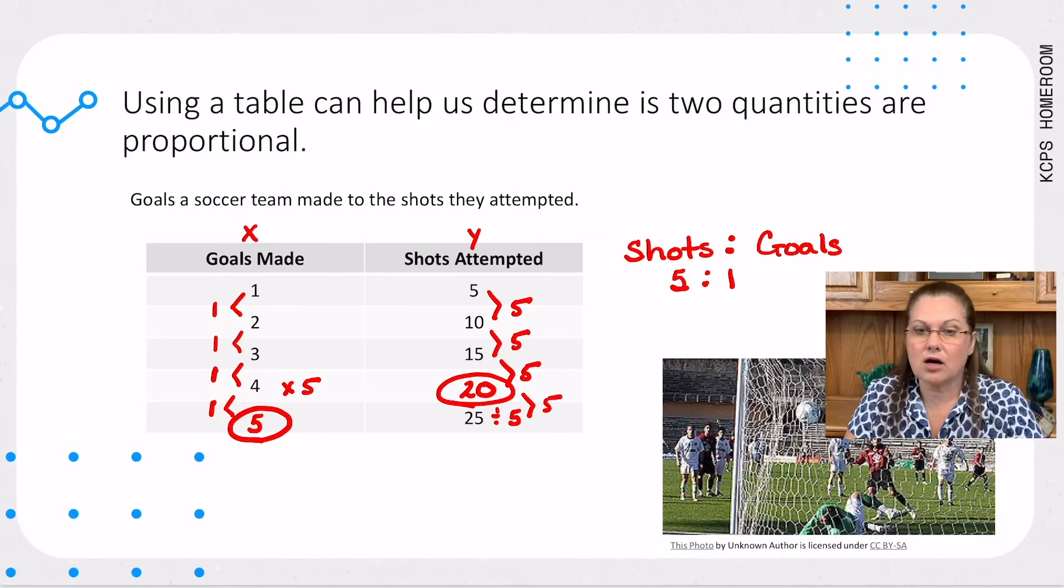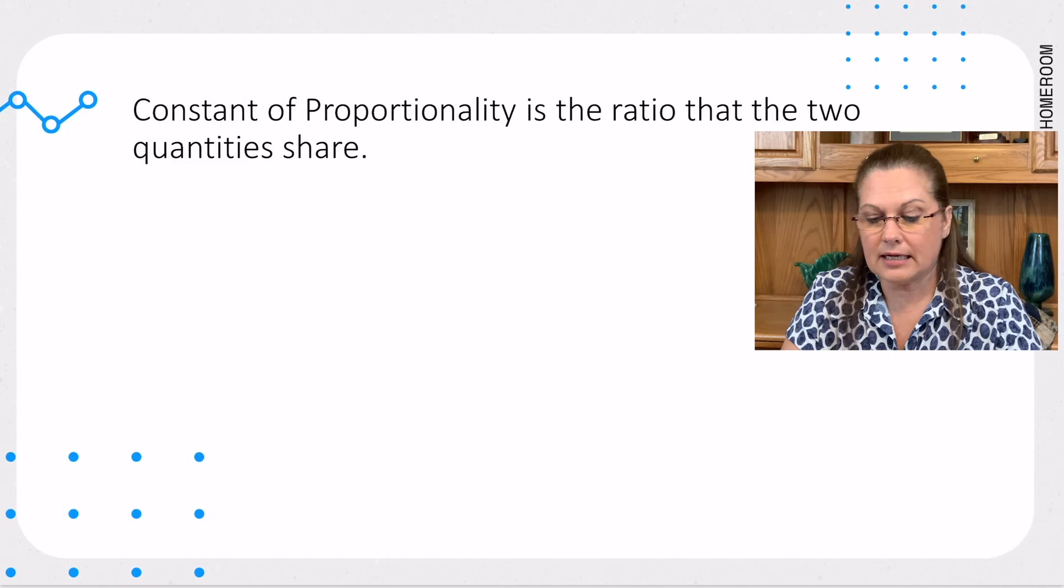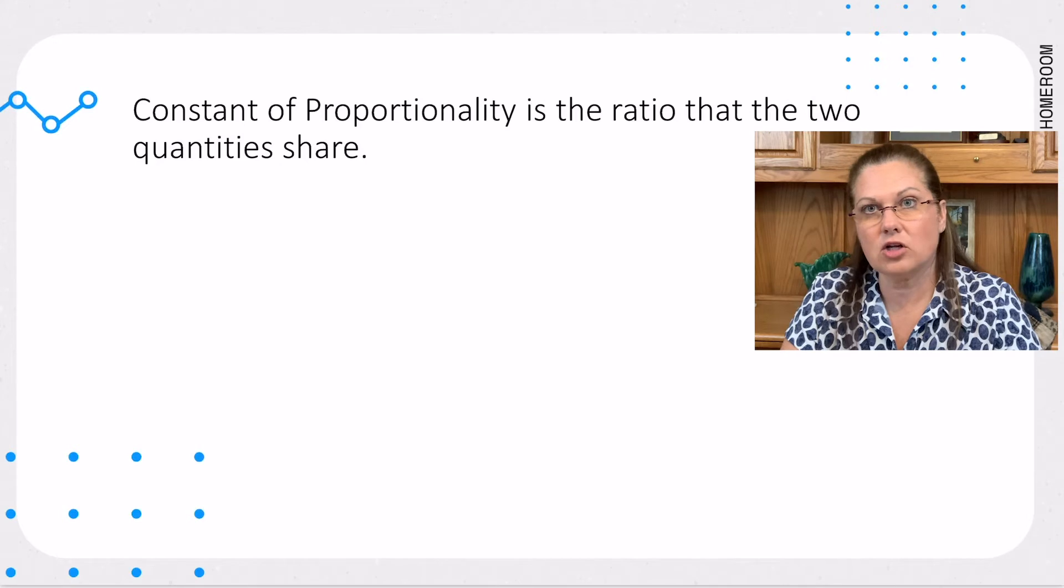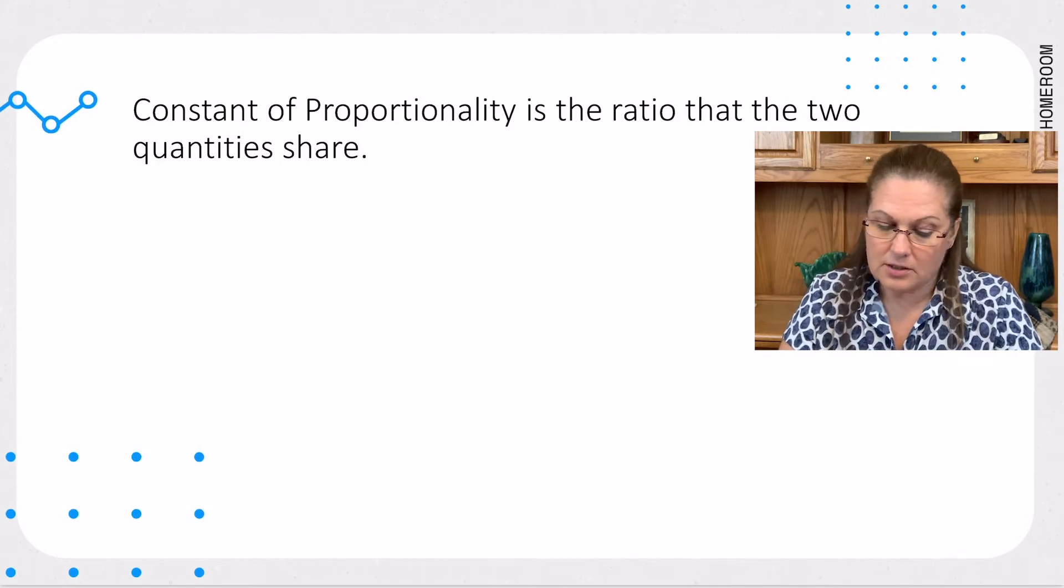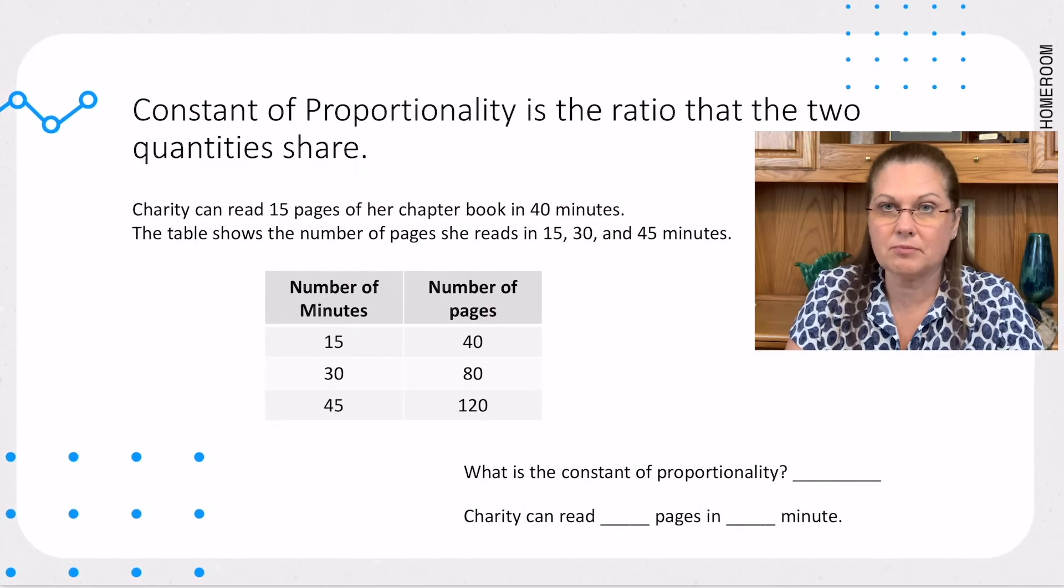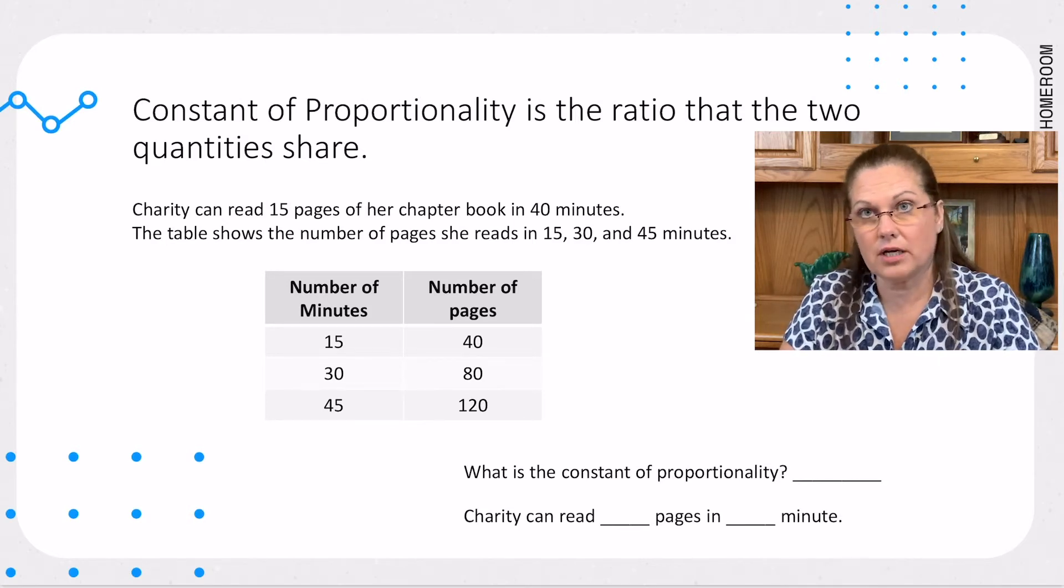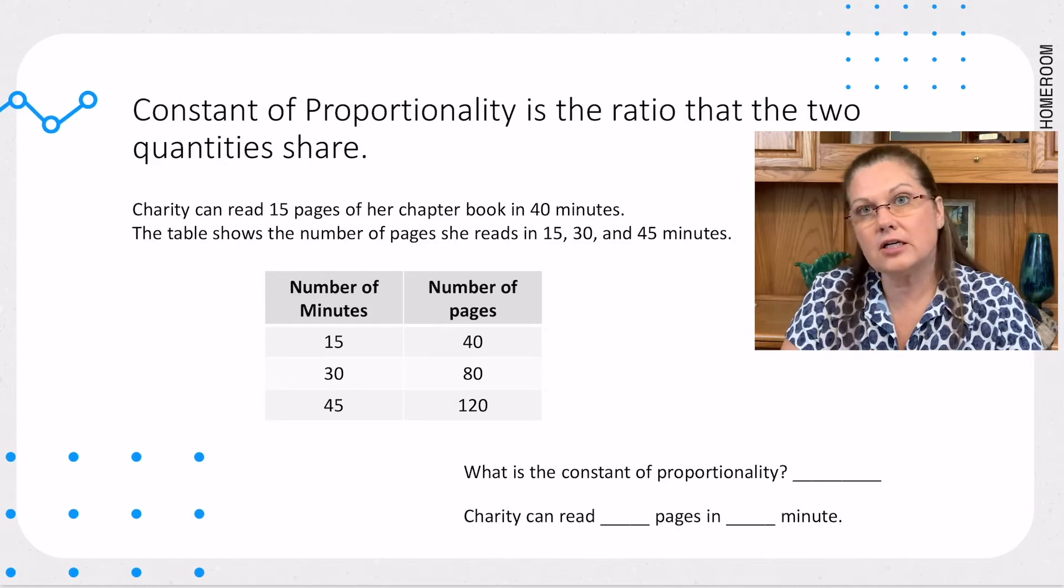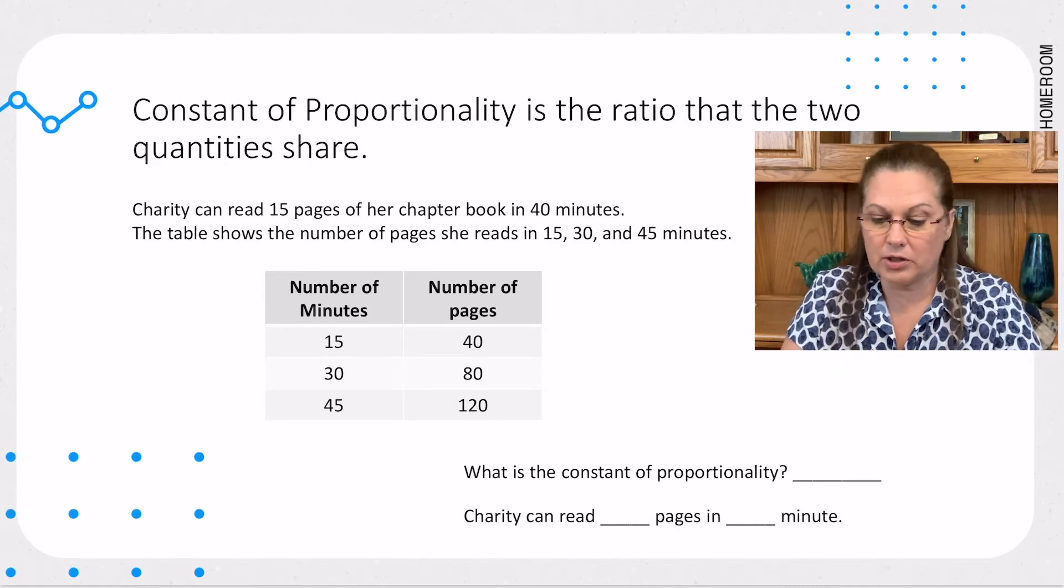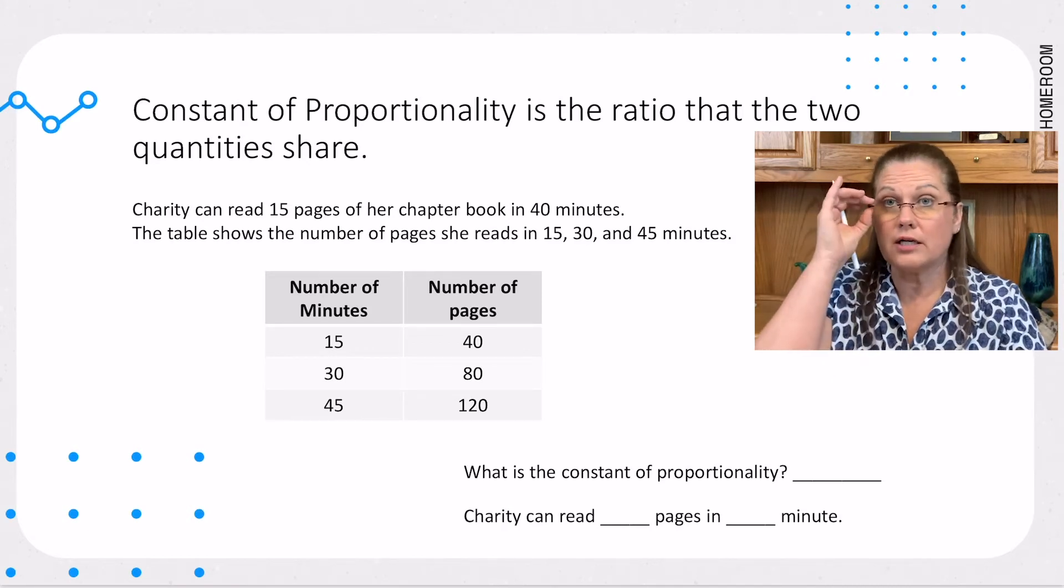Let's talk about what is the constant of proportionality. Constant of proportionality is the ratio that the two quantities share. So, let's take a look at an example. Charity can read 15 pages in her chapter book in 40 minutes. The table shows the number of pages she reads in 15, 30, and 45 minutes. We need to figure out what is our constant of proportionality or what is the ratio that our two quantities share.